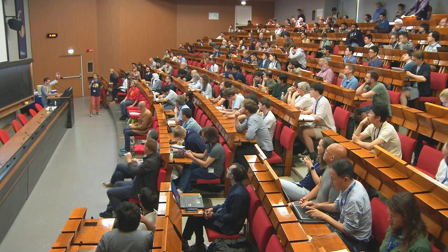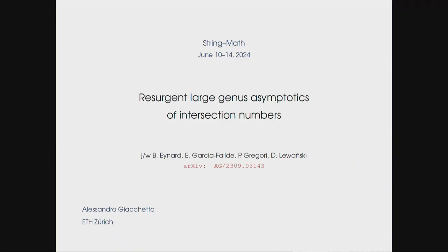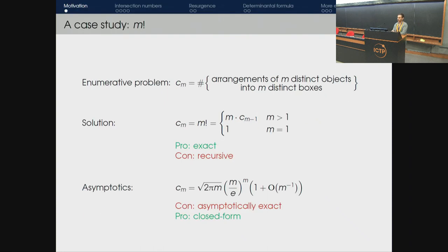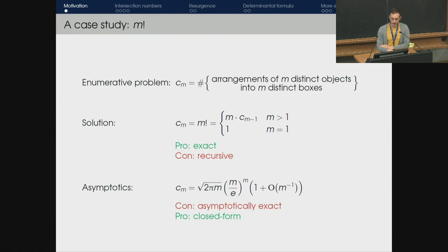Next contributed talk is Alessandro Giacchetto on large-genus asymptotics of intersection numbers. Thank you for the possibility to speak. Before talking about large genus asymptotics of intersection numbers, let me start with a toy example. Suppose I ask you to count the number of arrangements of m distinct objects into m distinct boxes. A possible answer is the factorial m!, which is exact but recursive. A possible way around this is to use Stirling's approximation formula, which has the advantage of being a closed-form expression, but is only asymptotically exact — and you can improve this with sub-leading corrections.